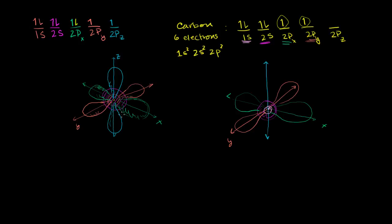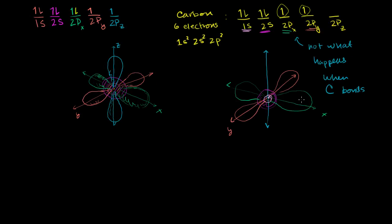That's what you would expect if you just stayed with this model. But the reality of carbon is very different. If you look at a methane molecule, carbon doesn't form just two bonds — we know carbon forms four bonds. It wants to have eight electrons. So you have to think about a different reality. This isn't really what's happening when carbon bonds. This brings us to the discussion of SP3 hybridization, which is actually not that complicated of a topic — it sounds daunting but is pretty straightforward.